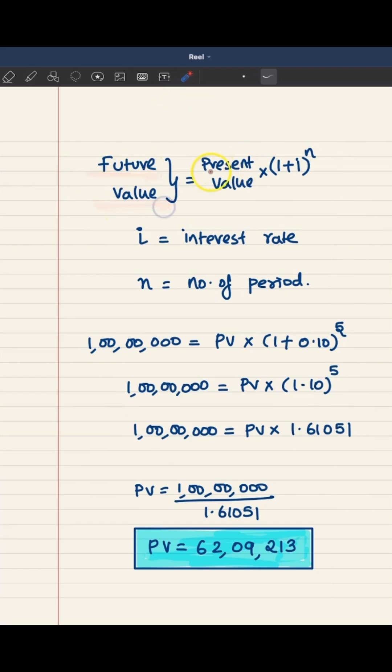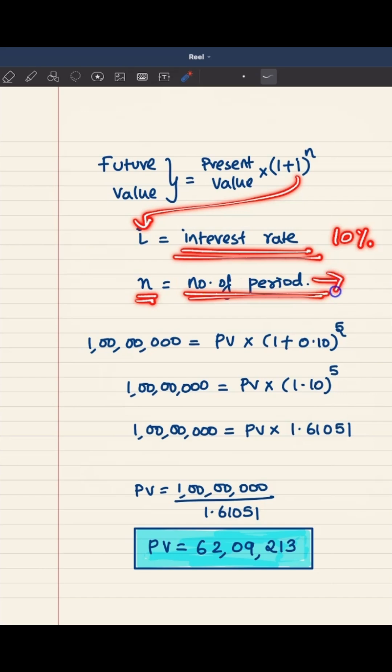Future value is nothing but present value multiplied by (1 + i) raised to the power n. So here i stands for interest rate. We assumed it as 10%. n stands for the number of periods, and I told you it is 5 years because you are getting 1 crore at the end of 5th year.